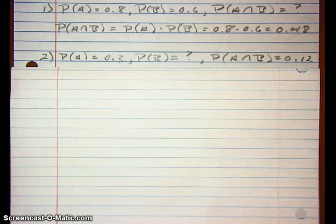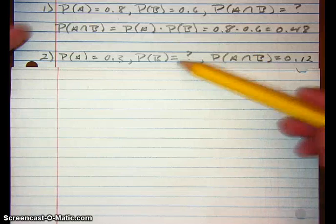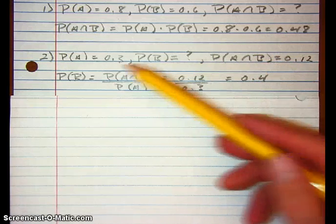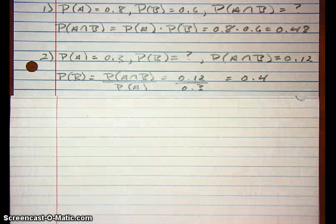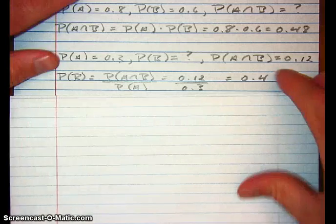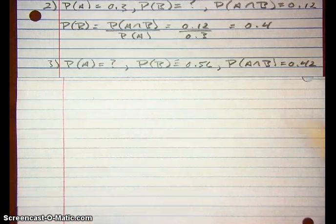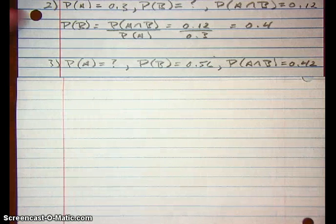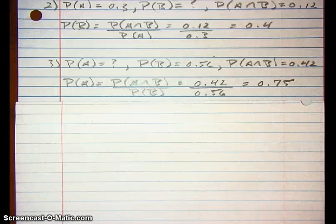Suppose you're given the probability of A and B, and you want to find the probability of B. You can solve for that: the probability of B is the probability of A and B divided by the probability of A, which is 0.12 divided by 0.3, giving 0.4. Similarly, if you want to find the probability of A given the probability of B and the probability of A and B, just divide: 0.42 over 0.56 is 0.75.